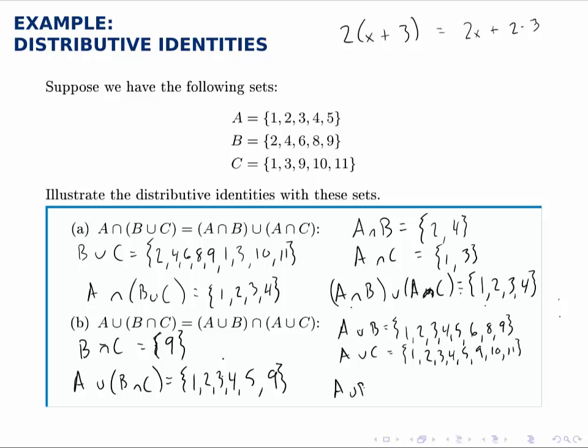And if we take the intersection of those two things, we notice that the 1 through 5 appears in both of them and then also the 9 appears in both of them. And that's everything that appears in both. So again we notice we got the same answer whether we work with the left-hand side or the right-hand side. And these again are called the distributive identities, which hold for any sets A and B.